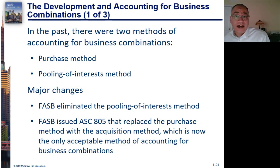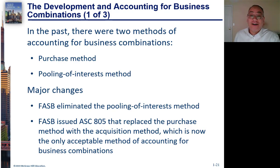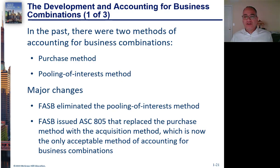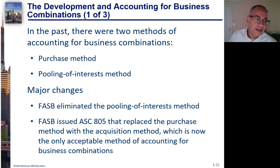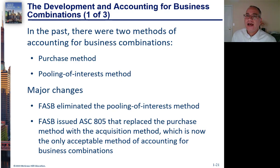When I took this class in 1988, there were two ways of accounting for business acquisitions. One was purchase and the other was pooling. Purchase was commonly called acquisitions and pooling was called mergers. The way it worked was that if you met 12 criteria — there were 12 criteria for pooling — and if you met all 12 of those criteria, then you had to use pooling accounting.